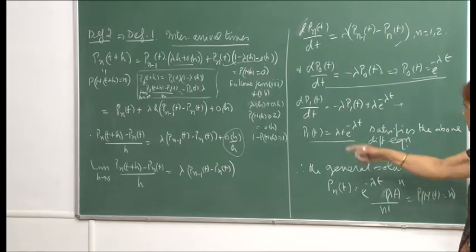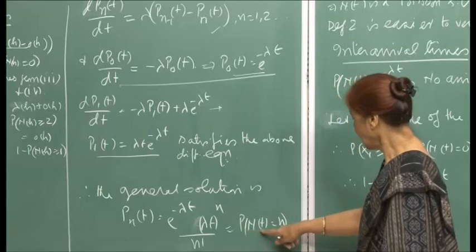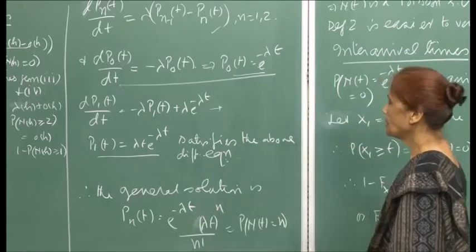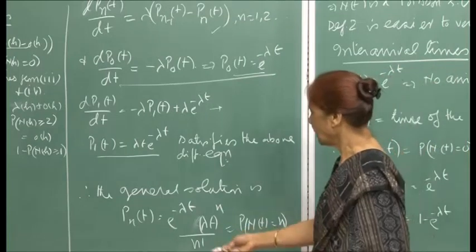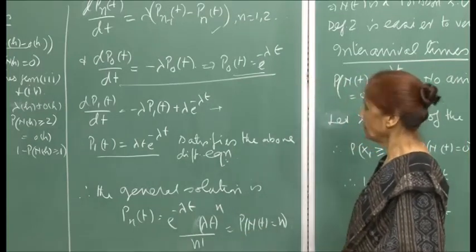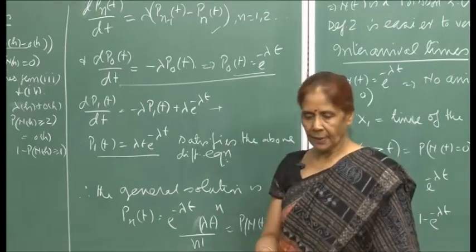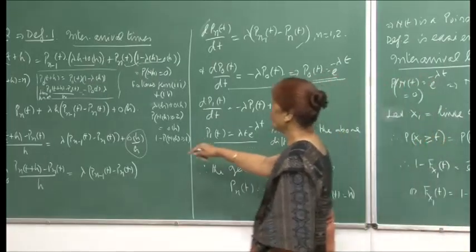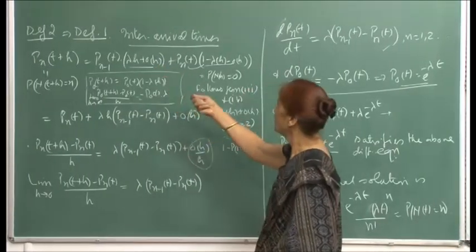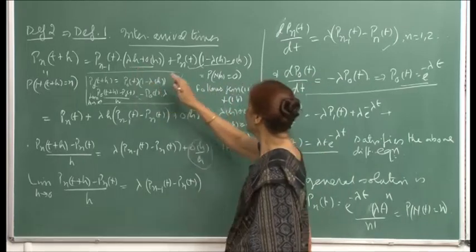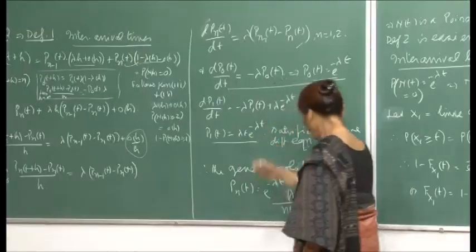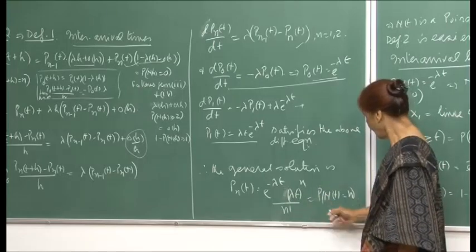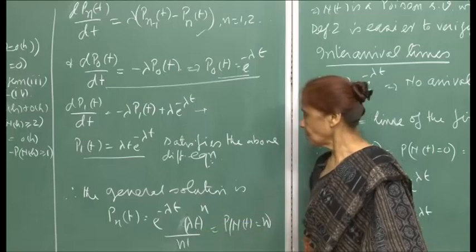Since p_n(t) = P(N(t) = n), this confirms that the number of arrivals up to time t follows a Poisson distribution. The conditions in Definition 2 — particularly the probability of one occurrence in a small interval h being of the order λh — helped us show that the distribution is Poisson. Definition 2 is easier to verify in practice, and once we have established the equivalence, we can use whichever definition is more convenient.